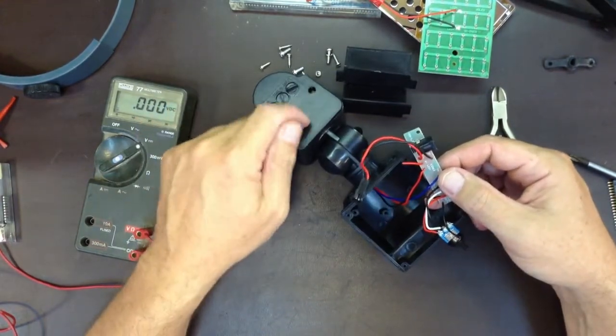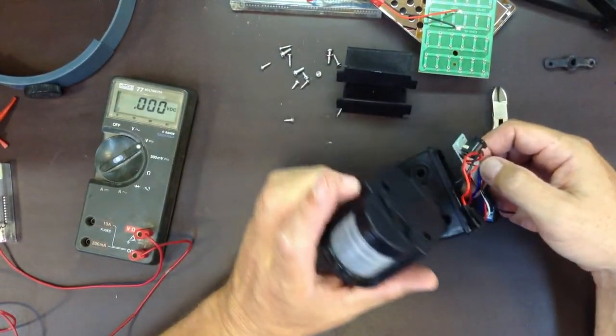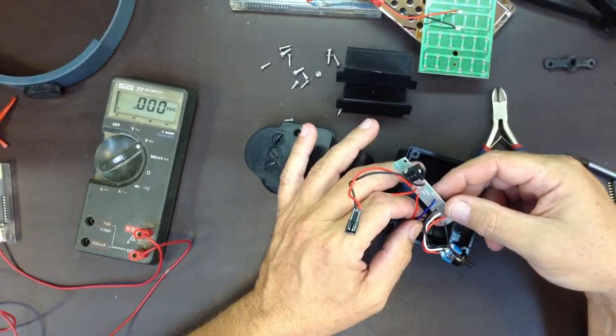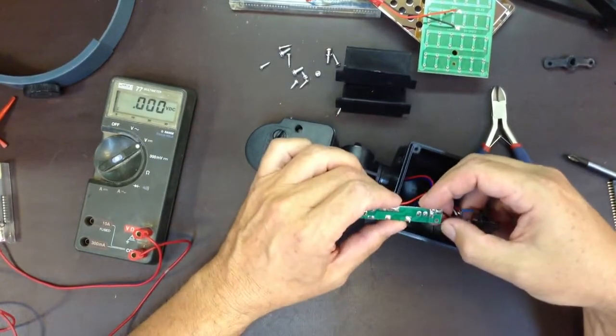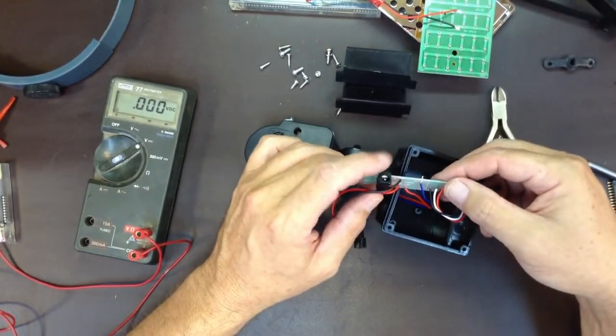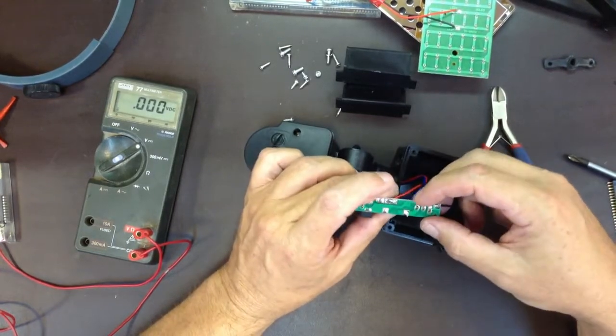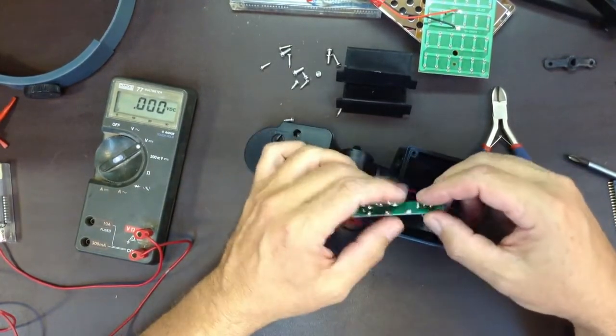Yep. And so the blue is the signal coming back from that. And it's pretty safe to assume that this motion detector is going to work off six volts as well. Probably with a pretty wide range.